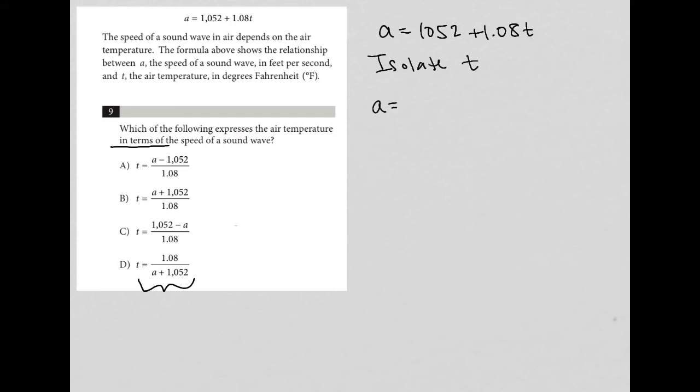So to do that, I'm going to take my A equals 1052 plus 1.08T. I'm going to subtract 1052 from both sides, right, in route to getting this T alone. So I'll have A minus 1052 is equal to 1.08T. And then lastly, to get T alone, I'm going to divide both sides by 1.08.